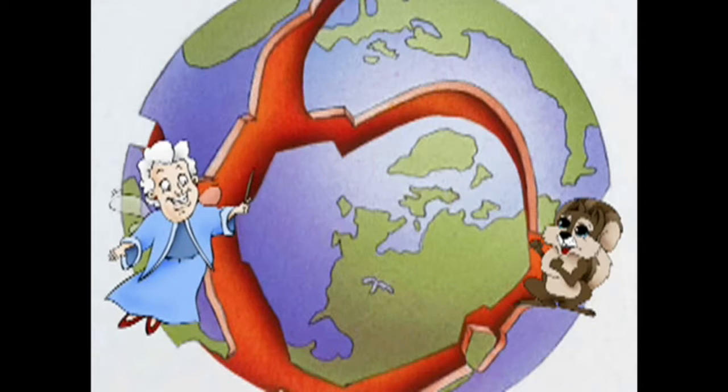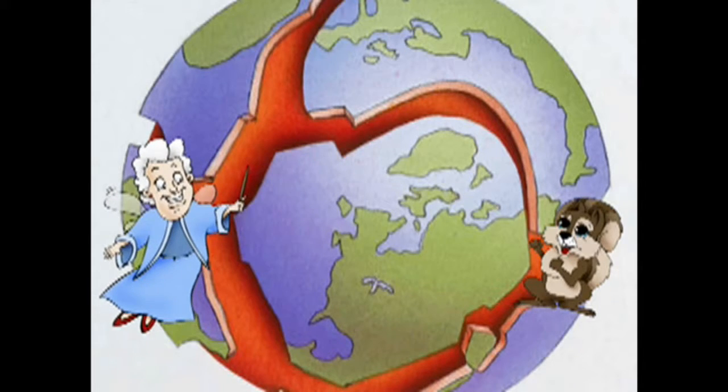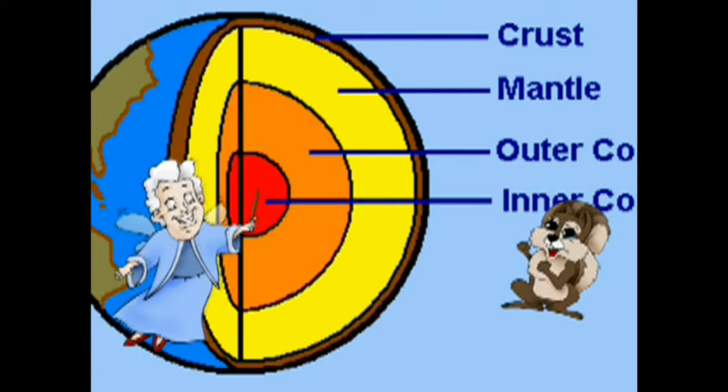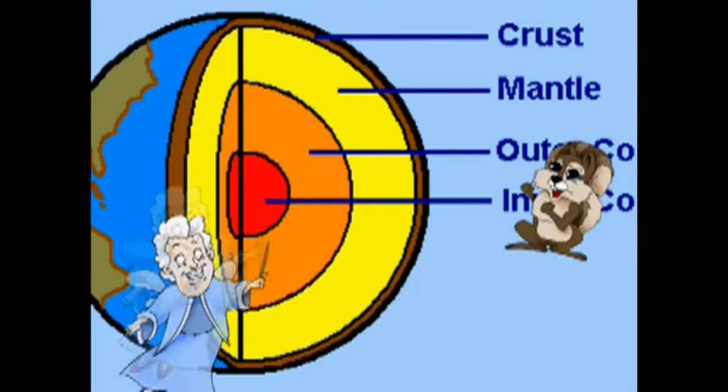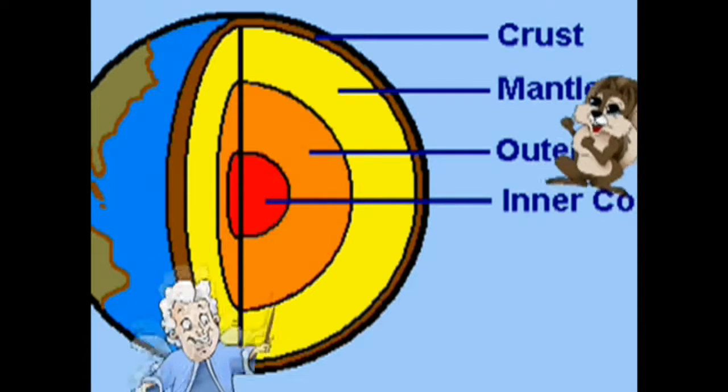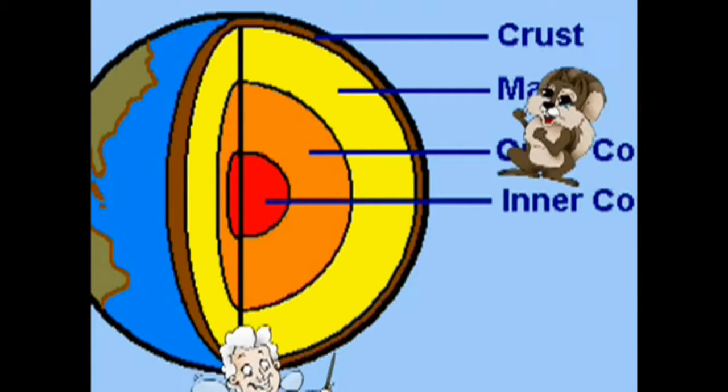The earth has four sections: the inner core, the outer core, the mantle, and the crust.